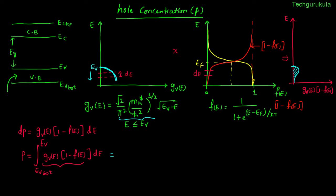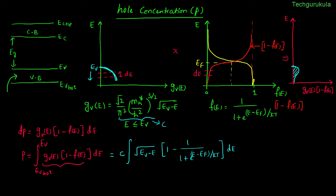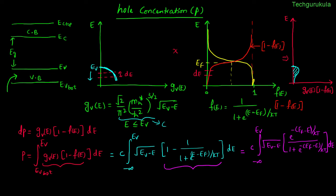Taking the prefactor constants together as C, after substituting gV(E) and (1 − F(E)), the integral takes a specific form. The lower integration limit can be changed from EV_bottom to minus infinity, because below EV_bottom the area under the curve is essentially 0 — so integrating from minus infinity to EV gives the same result. Rearranging this part of the equation, we can rewrite the integral accordingly.